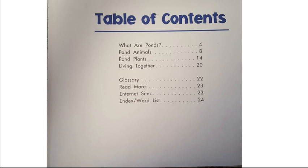Here is the table of contents. We have talked about this before in our nursery rhyme book. The contents are the things in the book, so this page tells us what's in our book. These words tell us what is on a certain page, and the numbers on the other side tell us the page where we can find these things. If I want to learn more about pond plants, I would turn to page 14 in the book.